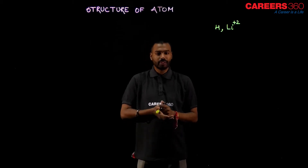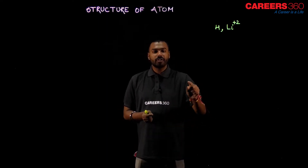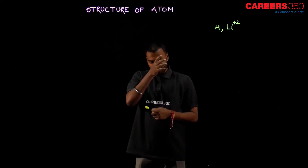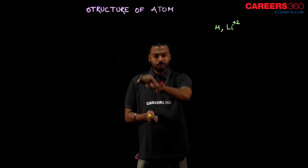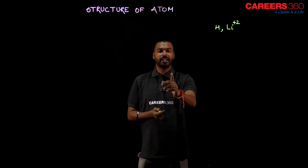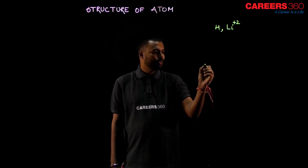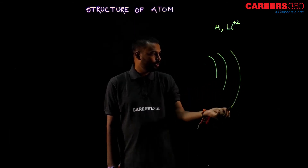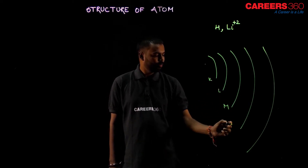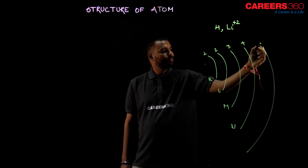Bohr is saying that his orbit is circular, and in this orbit the electron revolves without radiating energy, without emitting energy — so it will not hit the nucleus. The orbits are named K, L, M, N, O, P, Q and so on, corresponding to orbit numbers 1, 2, 3, 4, 5 and so on. Electrons revolve in these circular orbits.